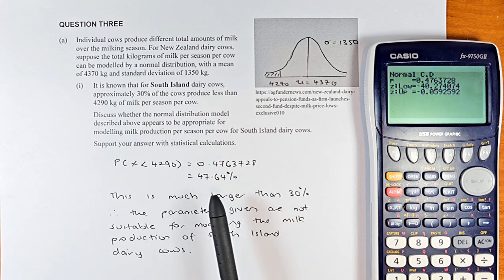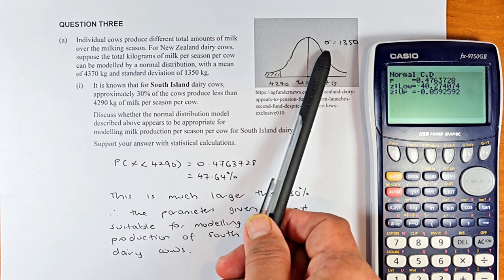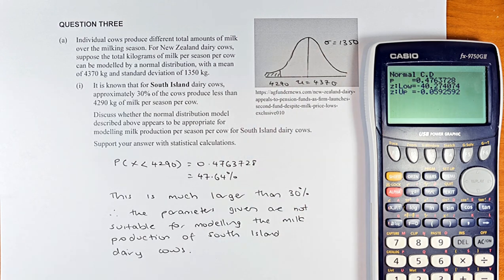So remember this number, the mean is 4370 and standard deviation is 1350 because we need them in the excellence part of the question, which is question 3A part 3. Cheers everyone and have a great day.